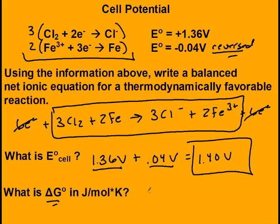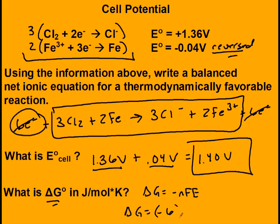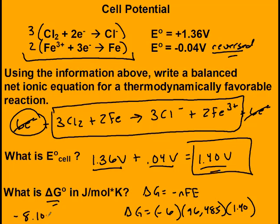For delta G, use delta G = −nFE. N is the number of electrons canceled out — that's 6. F is Faraday's constant: 96,485 coulombs per mole. E is what was just calculated. Multiplying that out gives delta G = −8.10 × 10⁵ joules.